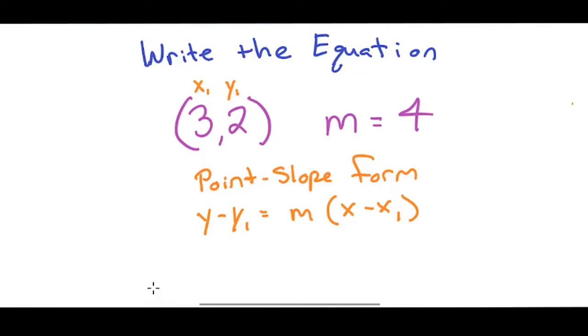I have X1, Y1, and m. M is 4. So I'll rewrite this as Y minus 2 equals 4 times X minus 3.